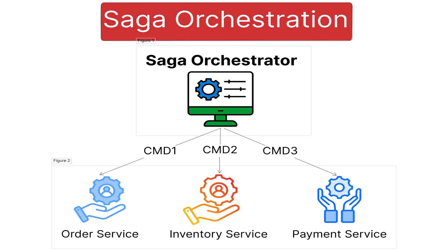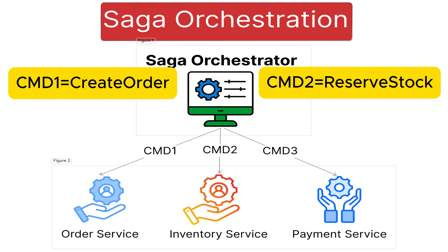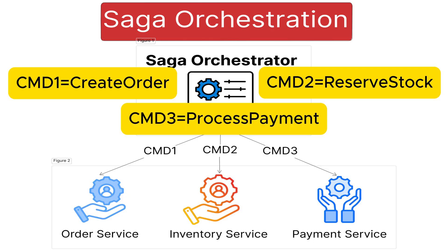Let's consider the same e-commerce flow with three services. When a user submits an order, it goes to the orchestrator. The orchestrator starts the process by sending a create order command to the order service. If the order is successfully created, it sends a reserve stock command to the inventory service. If the stock is reserved, it moves to the payment service and sends a process payment command. If all steps succeed, the orchestrator marks the entire flow as complete.